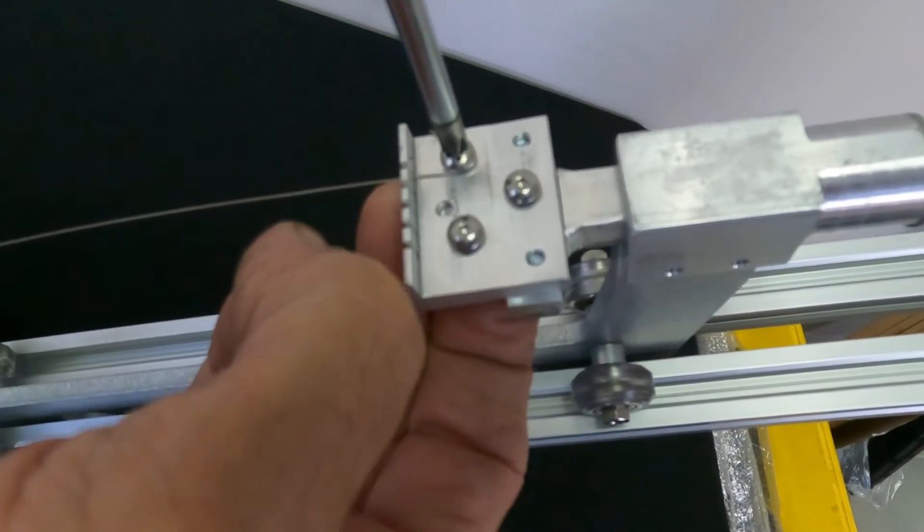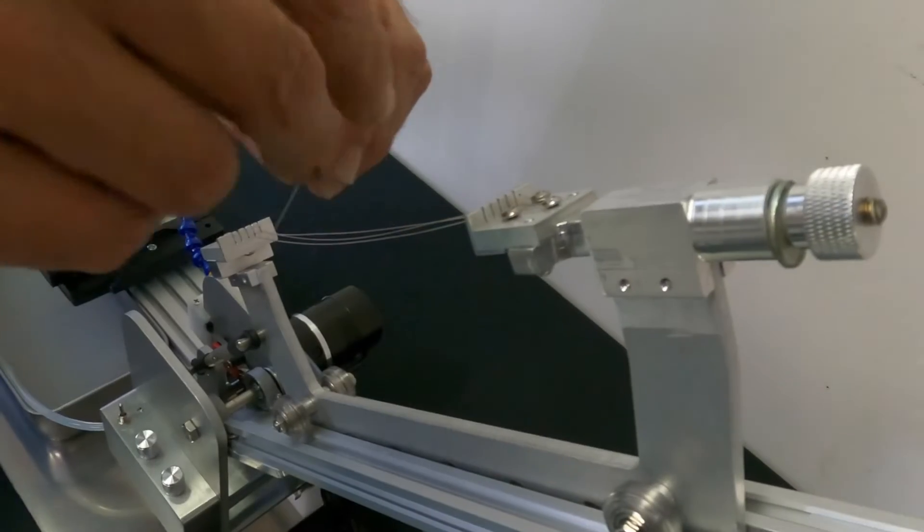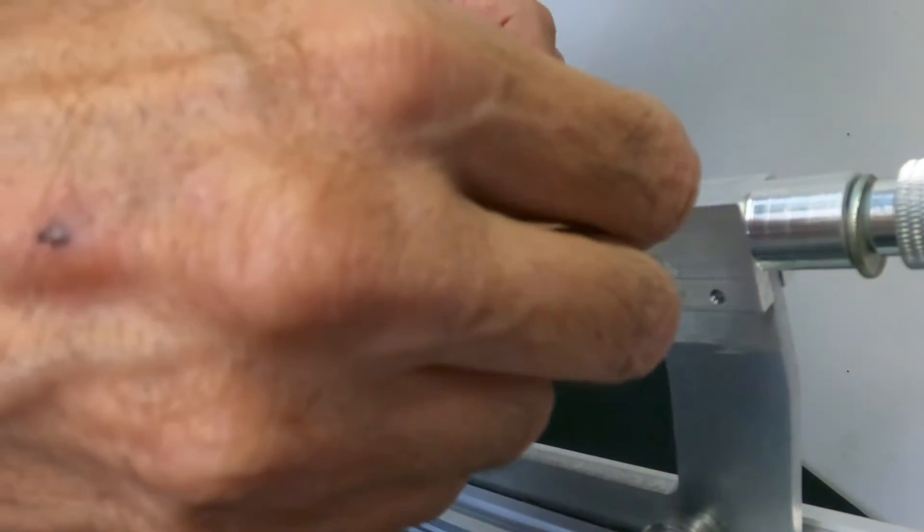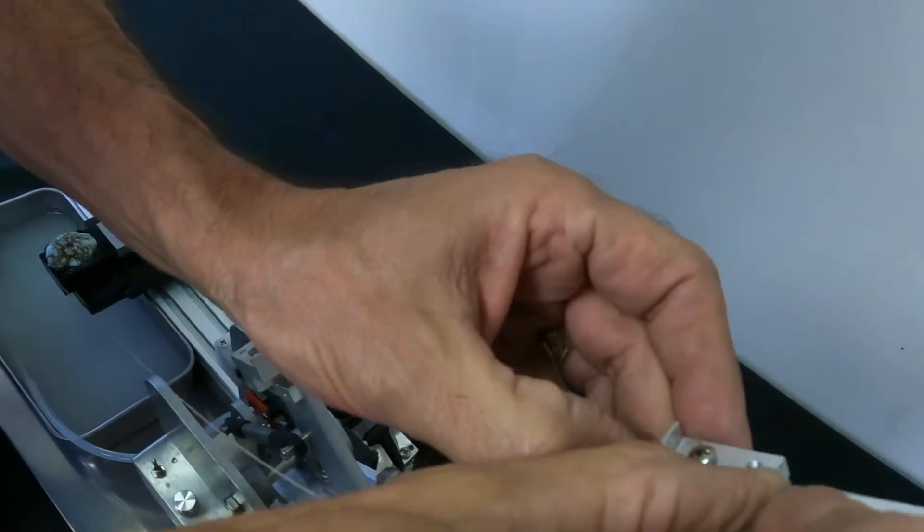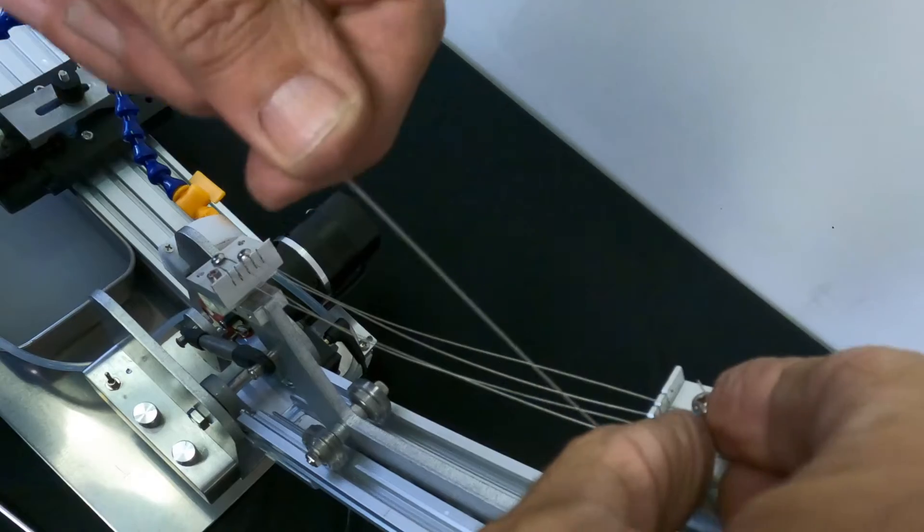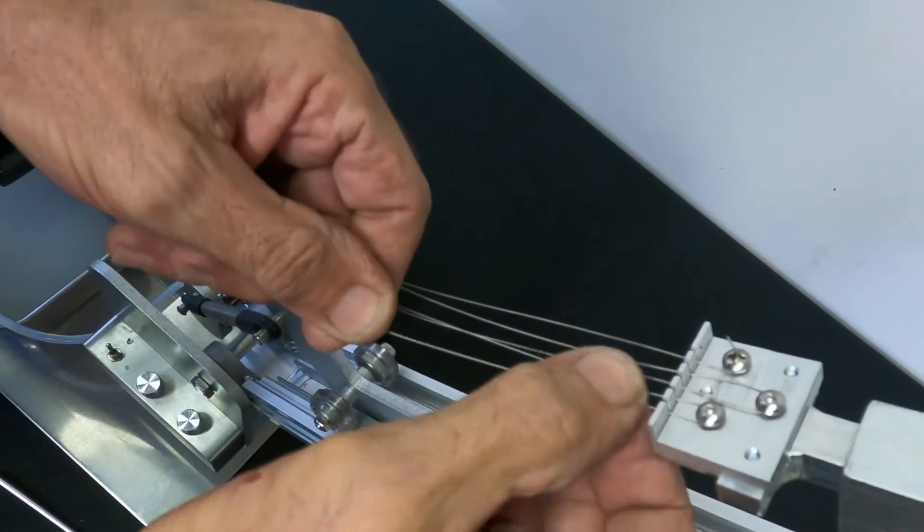You really do not need to tighten these very much. Make sure and leave a little bit of slack in the center wire. That's the one that wants to tighten up first. Pull it around the fourth and through the fifth guide.